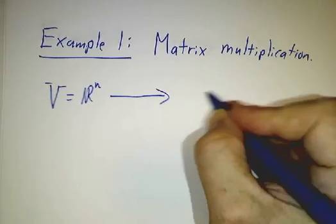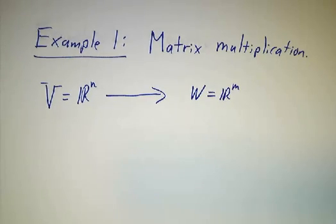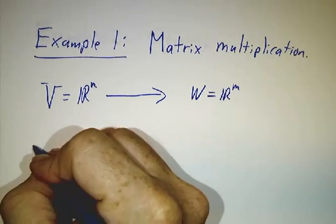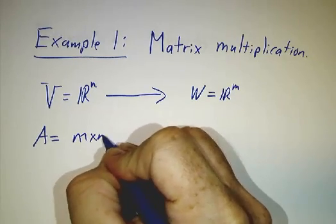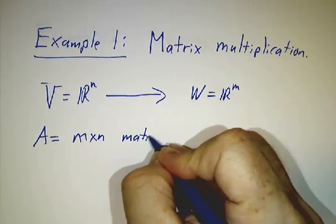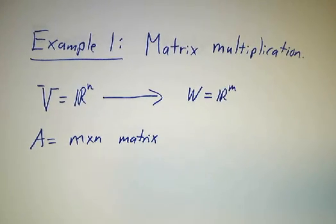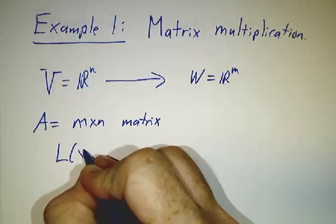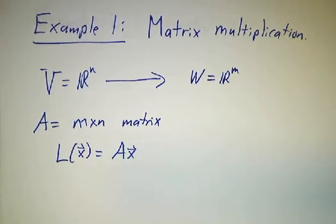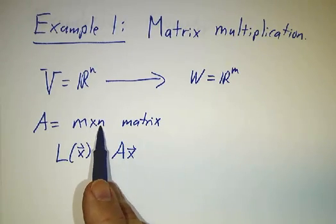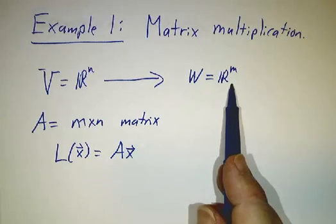And it maps to another space, which is R^m. And it's described by a matrix, which is an m by n matrix. And the rule is very simple. The rule is that L is just the matrix times x. So if you take an m by n matrix and you multiply it times an n vector, you get an m vector.